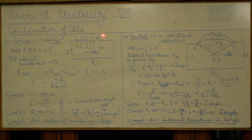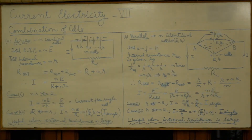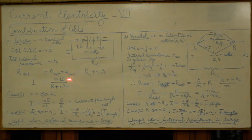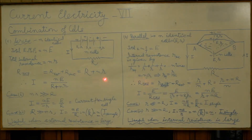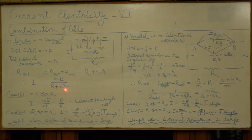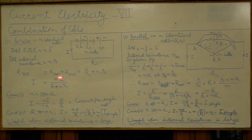Suppose this combination drives a current i through an external resistance R. The total resistance in the circuit will be equal to R external plus R internal. R external is capital R, and R internal is nr, so the total resistance in the circuit is R + nr. Accordingly, the current will be the total EMF (ne) of the combination divided by the total resistance (R + nr).